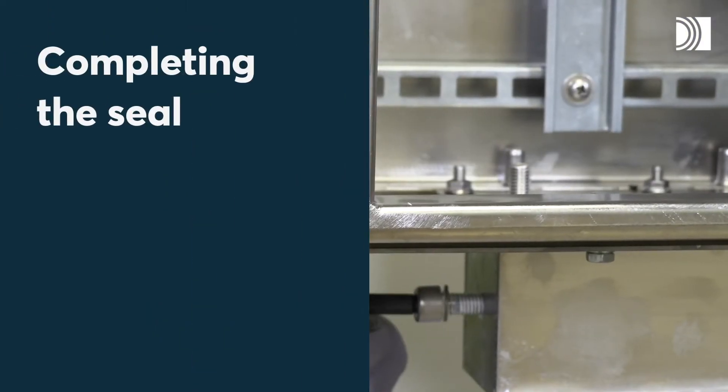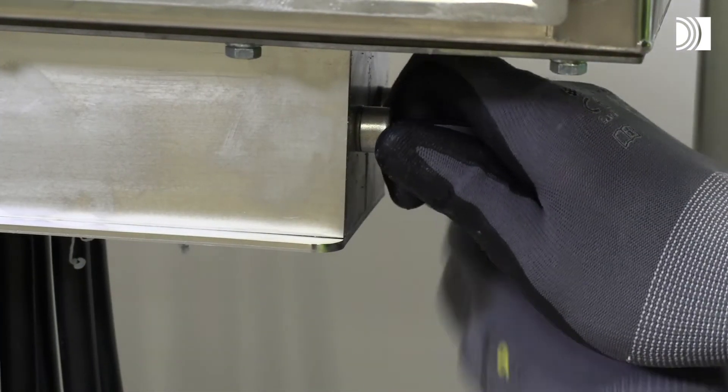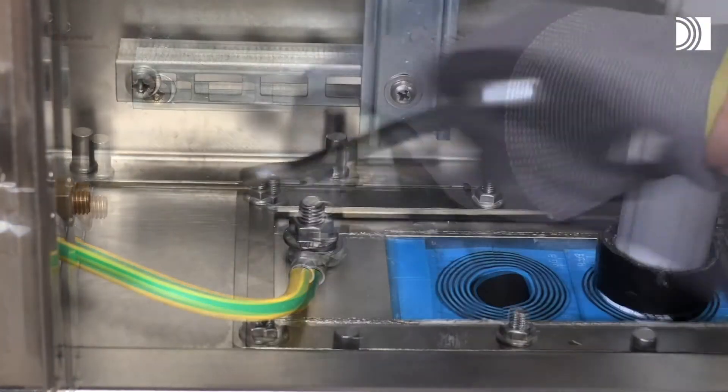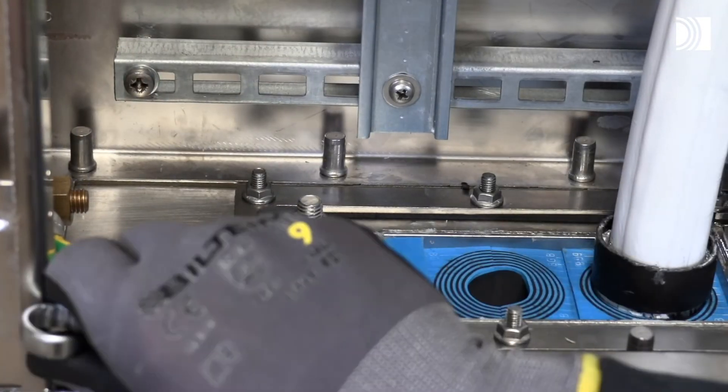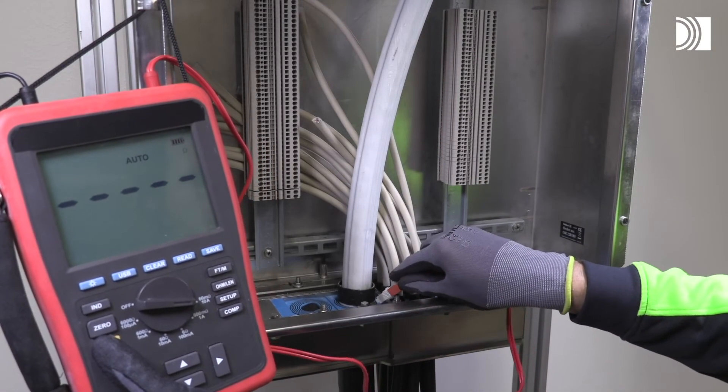Completing the seal. Tighten the screws of the three compression units to full mechanical stop. Attach the protective bonding conductor to the frame. Verify earth continuity from each cable armor to earth by using a suitable instrument.